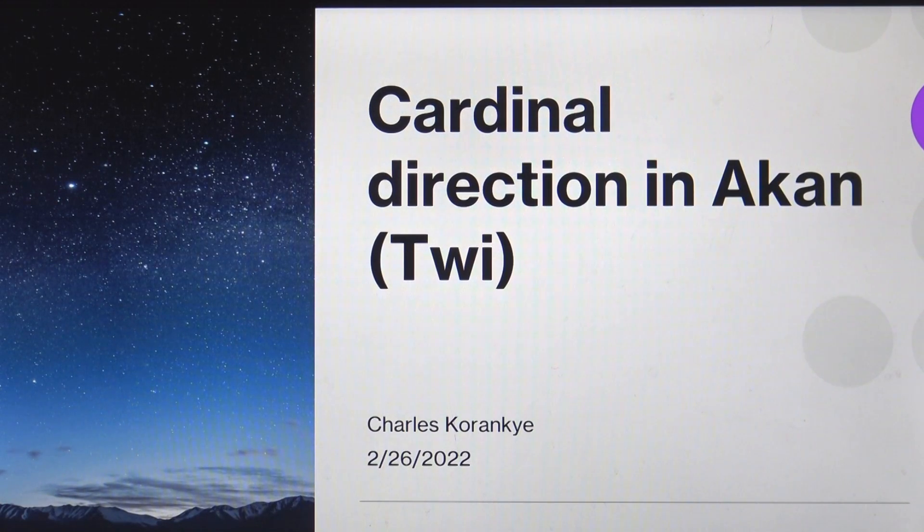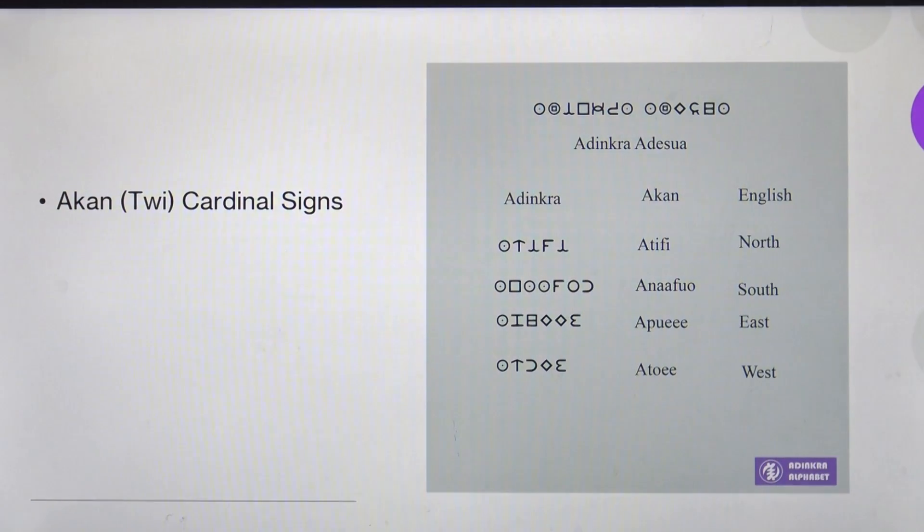This is a video presentation on cardinal direction in Akan. The cardinal signs or cardinal directions are four, as you know, and they are: Atifi, north; Anafo, south; Apuea, east; Atoe, west.